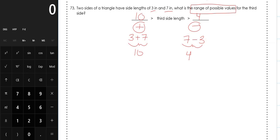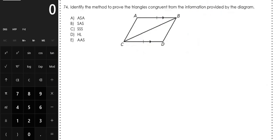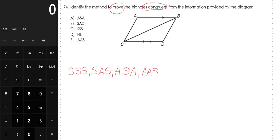Number 74: identify the method to prove the triangles congruent from the information provided in the diagram. The methods for proving triangles congruent are SSS, SAS, ASA, AAS, and HL — hypotenuse-leg — but HL is only used if you have right triangles. Let's go back to the question and see what information they gave us.